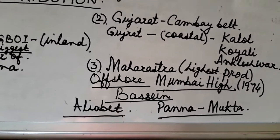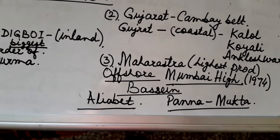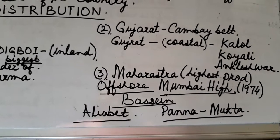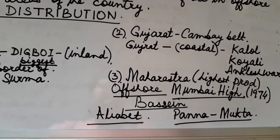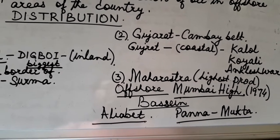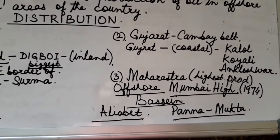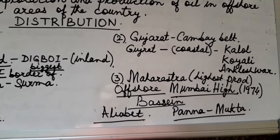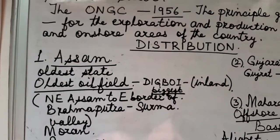Among the offshore oil fields, Mumbai High was established in 1974. Its description, including details about the oil rig, the platform called Sagar Samrat, and why it is called Mumbai High, are given in the book and need to be learned. Other offshore oil fields are Bassein and Aliabet. Panna and Mukta are two separate oil fields close to Mumbai.